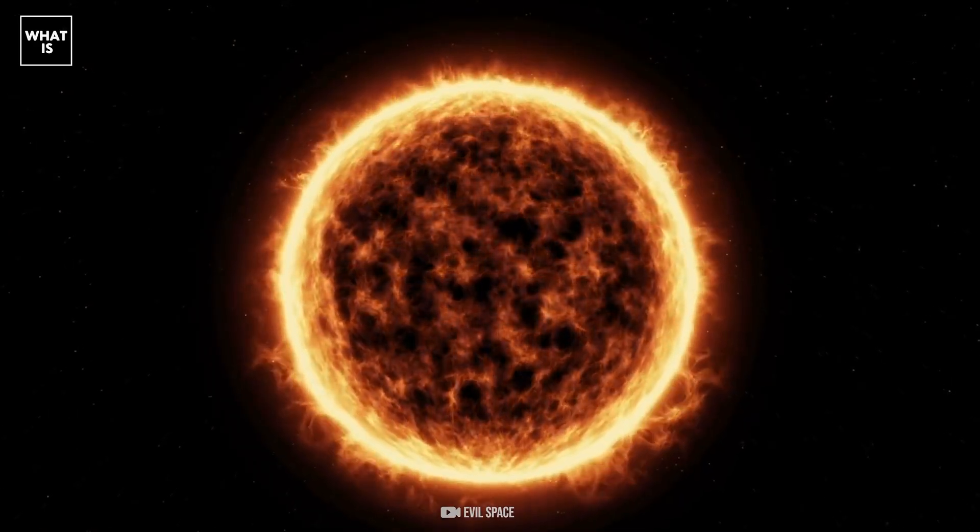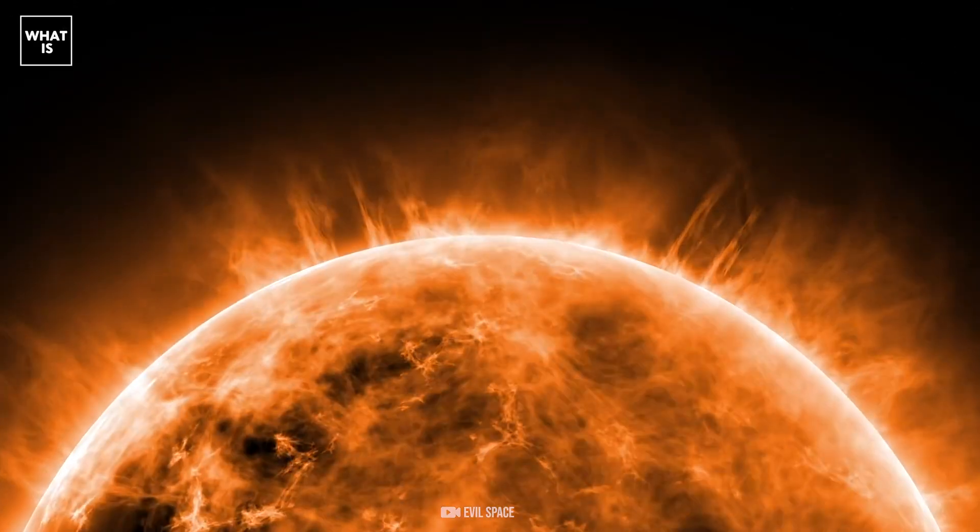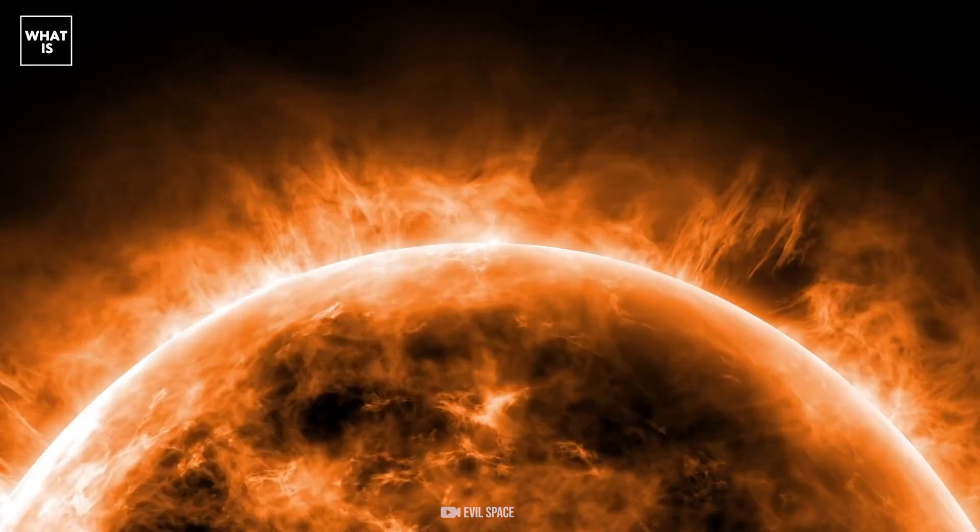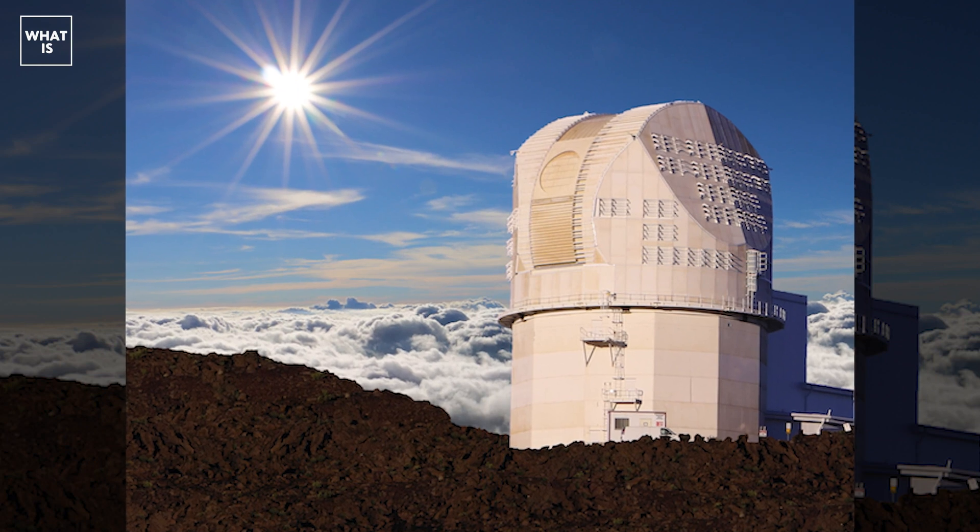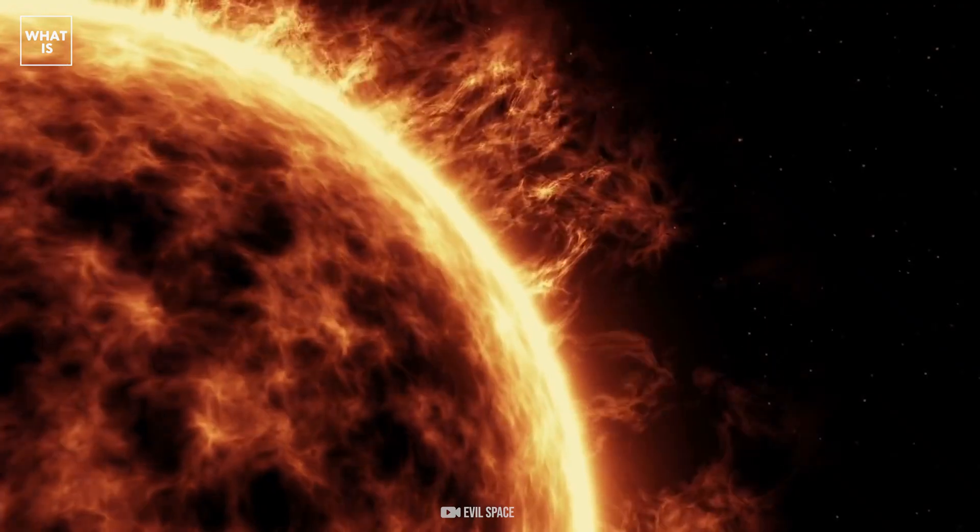The movements of the solar plasma constantly twist and entangle the solar magnetic fields. Twisted magnetic fields can lead to solar storms that can negatively impact our technology-dependent modern lifestyle.